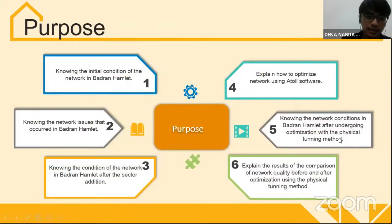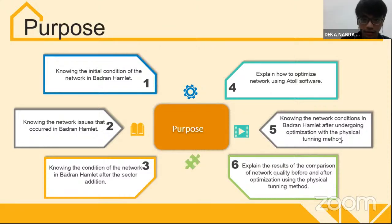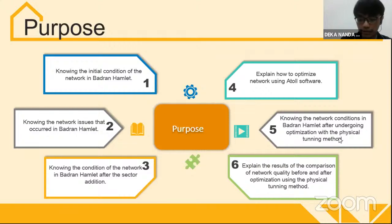The research purposes: first, knowing the initial condition of the network in Quadrant Hamlet. Second, knowing the network issues that occur in Quadrant Hamlet. Third, knowing the condition of the network in Quadrant Hamlet after sector addition. Fourth, explaining how to optimize the network using ATOLL software. Fifth, knowing the network condition in Quadrant Hamlet after undergoing optimization with the physical tuning method. And lastly, explaining the results of the comparison of network quality before and after optimization using the physical tuning method.